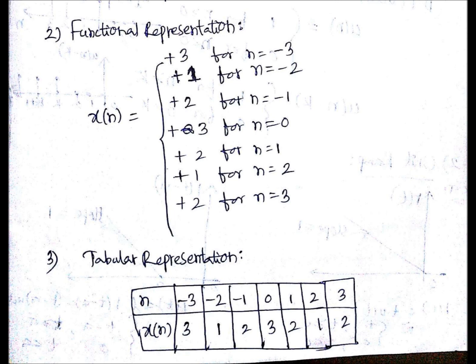The figure was same, but in the first step the representation is graphical. But here in functional representation, you need to write x(n) like this: one flower bracket, and +3 for n equals -3, +1 for n equals -2, +2 for n equals -1, and so on. This is the way of representing a signal in functional representation.